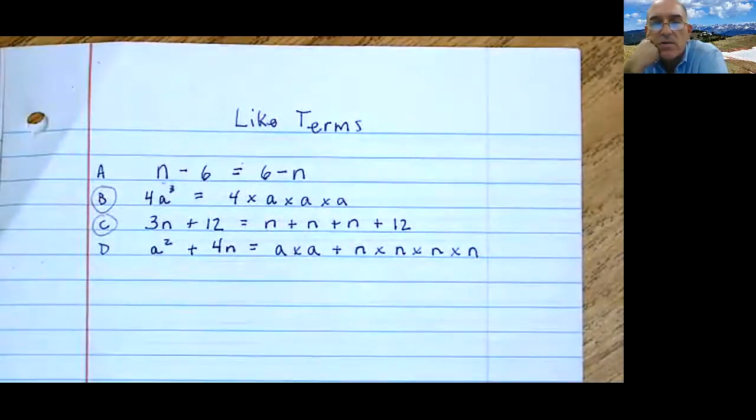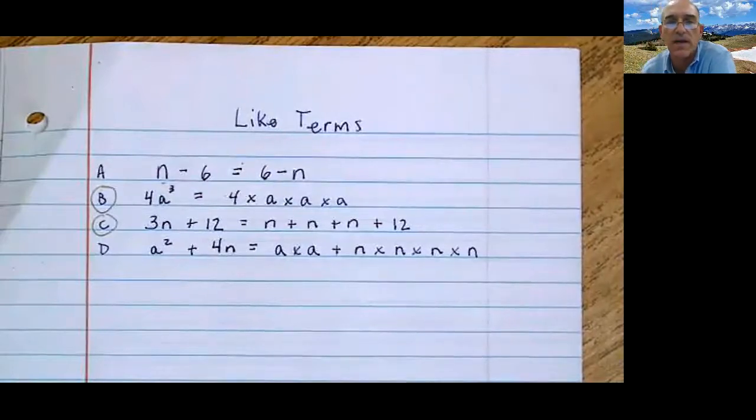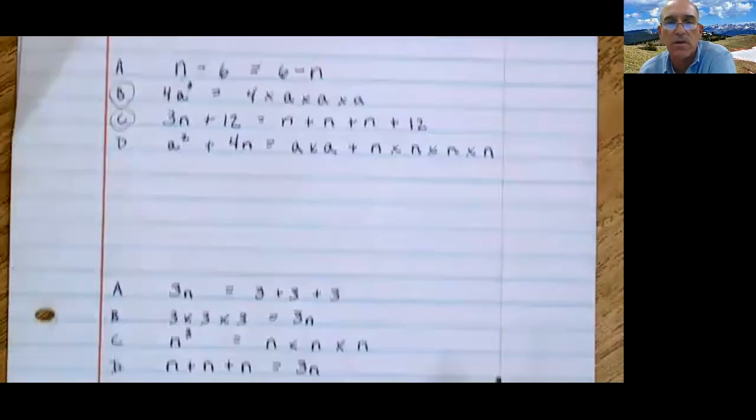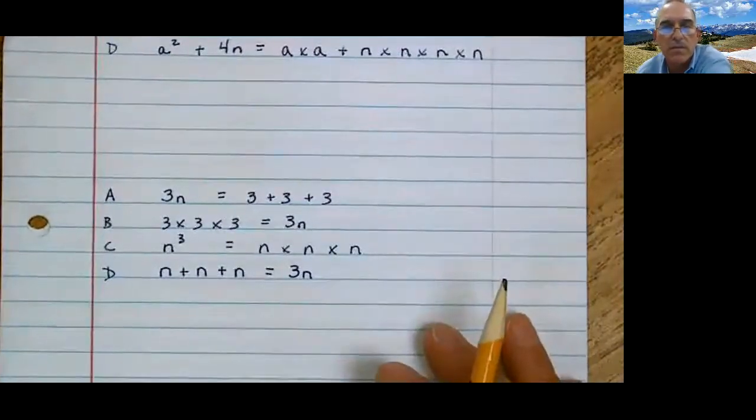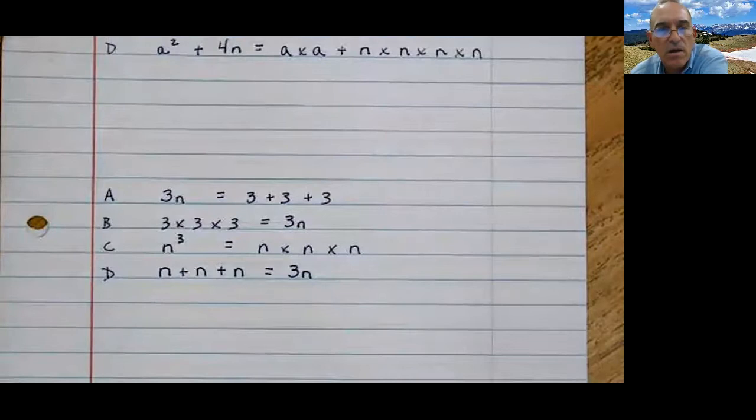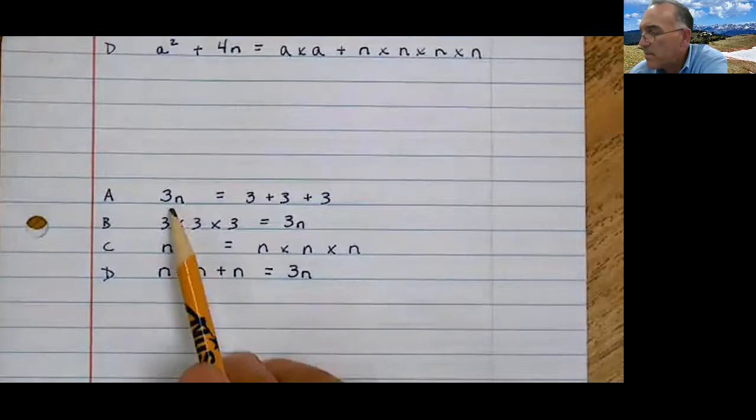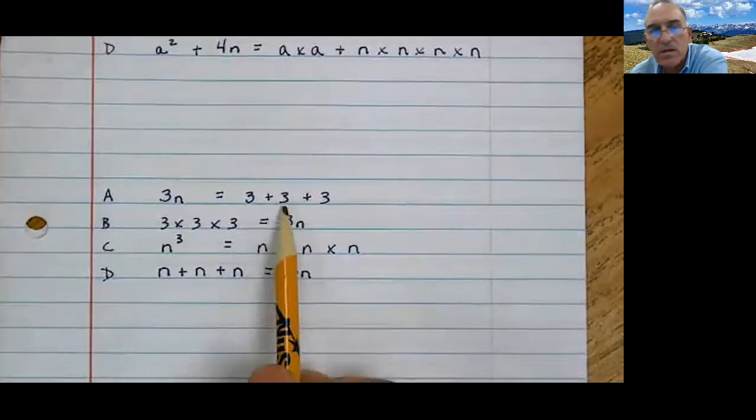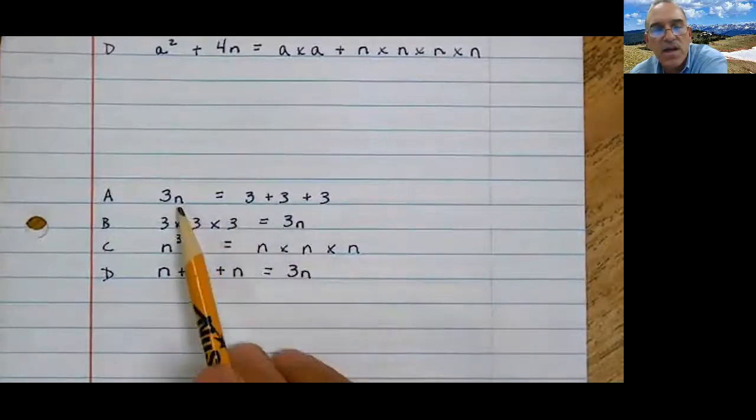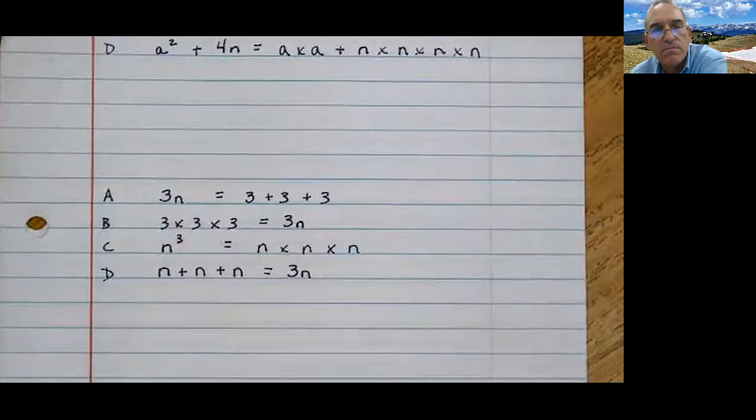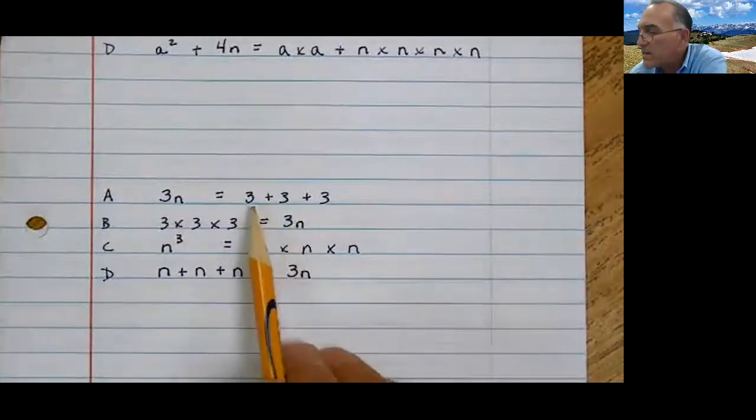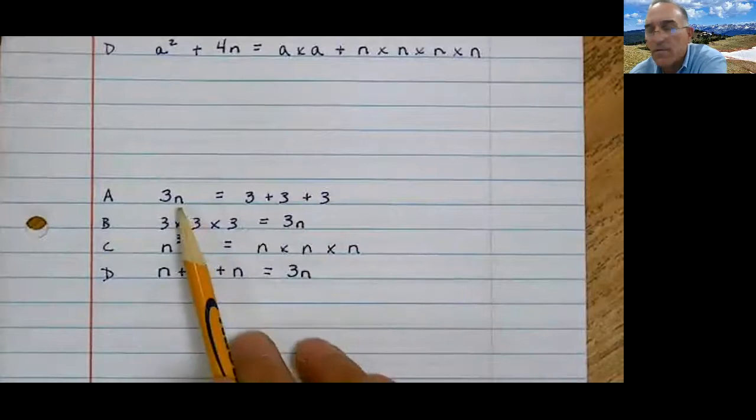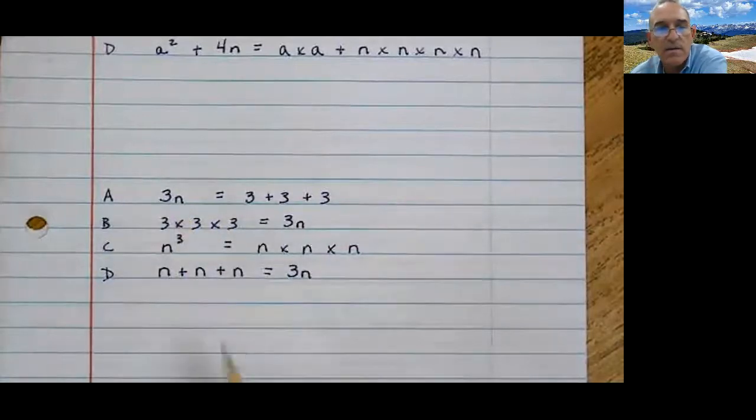So this is how like terms are presented on state tests. Let's look at another one. I need you paying attention. Select all that are true. 3n - is that 3 plus 3 plus 3? Does that equal that? It does not. Clearly, this right side equals 9. I don't see 9 over there, so it's not a.